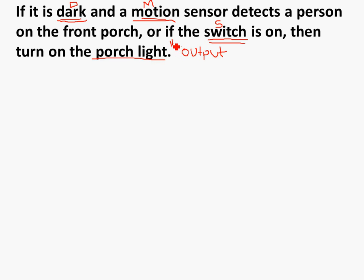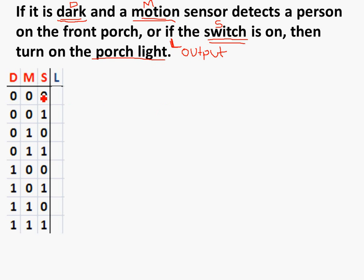Now that we've defined our variables, let's go ahead and create a truth table. Since there are three inputs — D, M, and S — there are eight possible combinations of the inputs. D could be either 0 or 1, M could be 0 or 1, S could be 0 or 1. If you enumerate every single possible condition, you'll have a total of 8, going from 0,0,0 to 1,1,1. It's the same as a binary count starting at 0 to a count of a total of 7.